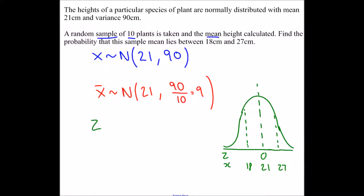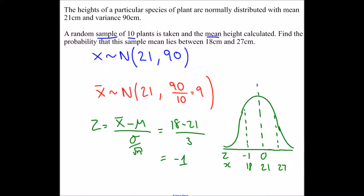We standardize in the usual way: z equals x-bar minus the mean, divided by sigma over root n. For x-bar = 18: z = (18 − 21) / 3 = −3/3 = −1. For x-bar = 27: z = (27 − 21) / 3 = 6/3 = 2. So we place z = −1 and z = 2 on the diagram.